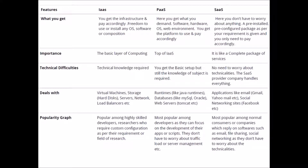Now let's see a comparison of all three. With IaaS, you get the infrastructure and pay accordingly, with freedom to use or install any operating system or software. With PaaS, you get what you demand — software, hardware, operating system, and web environment — you get the platform and pay accordingly. With SaaS, you don't have to worry about anything; a pre-installed, pre-configured package as per your requirement is given and you only need to pay accordingly. IaaS is the basic layer of computing, PaaS is on top of IaaS, and SaaS is a complete package of service.